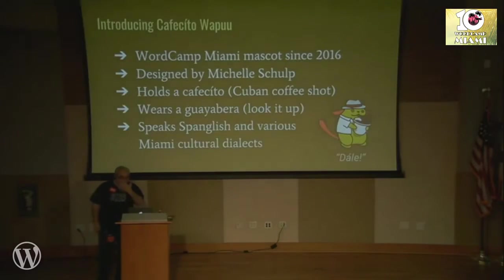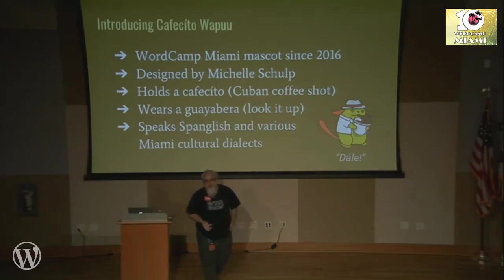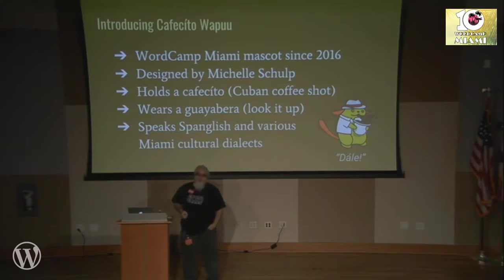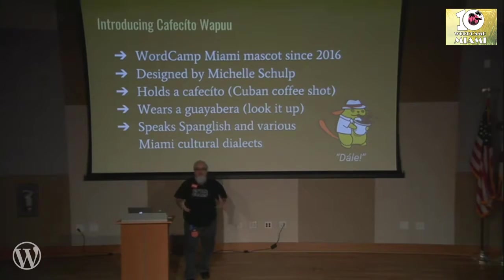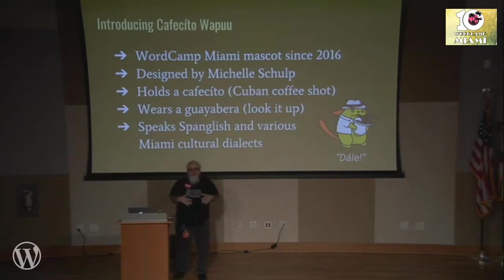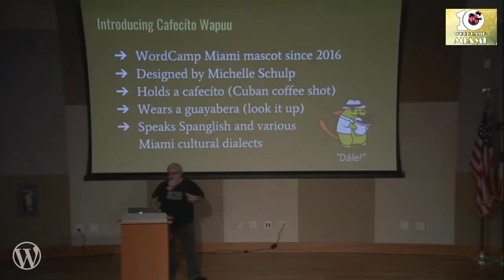Back in 2016, we got our own Wapu for Miami. And Cafecito Wapu was designed by Michelle Schupp — she's the girl with the purple hair, you'll see her around, she's here at WordCamp. All the Wapus hold something, like a ball or something like that. So our Wapu holds a little shot of Cuban coffee. You can see, rather than just the dots, he's got these crazy caffeinated eyes. He's shaking.